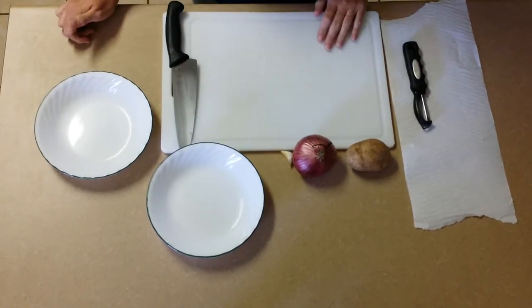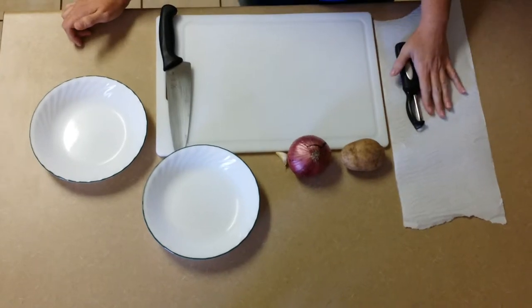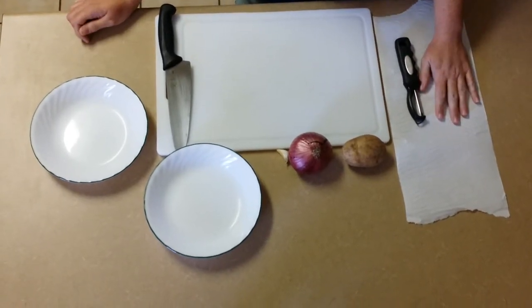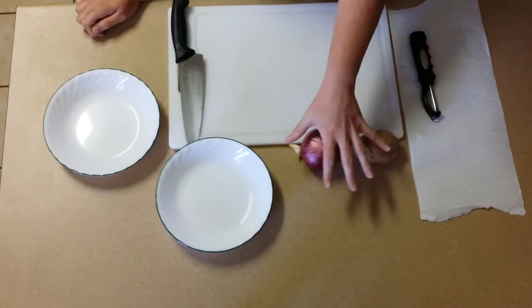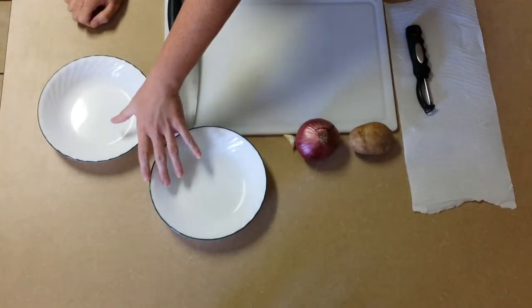First, if you look at how I have things set up here, I have my peeler with the towel. This is going to be for my peels. It's just easy to help control the mess. I have the vegetables I'm going to cut at the top and I have two bowls here.